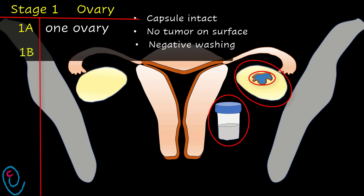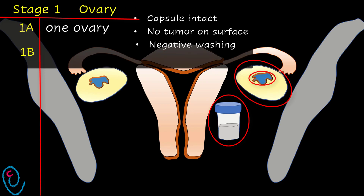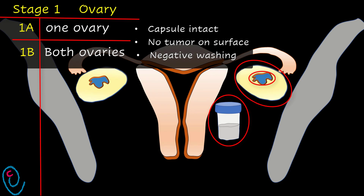In 1b, the tumor involves both ovaries, with the same criteria as 1a.